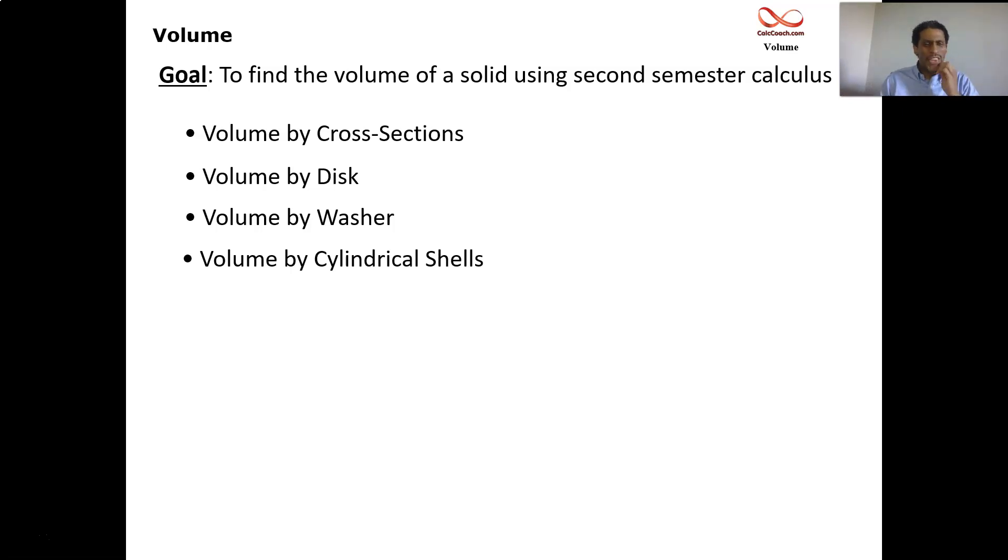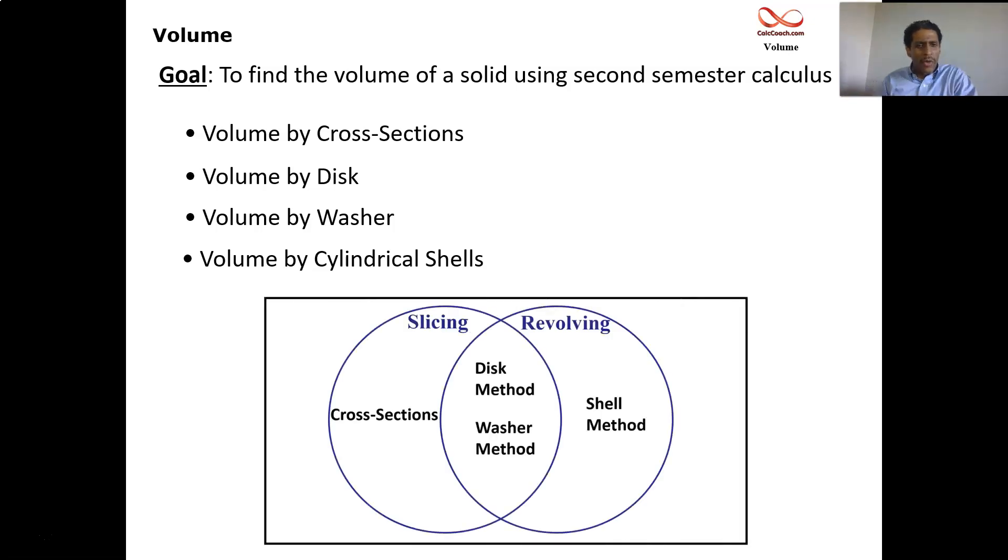The first three fit into a category where the action is happening to create the volume is a slicing. The last three fall into a category where the action that's happening to create the volume is revolving around an axis. And it turns out that disk and washer fit in both categories. It's both a revolving around an axis and a slicing at the same time. This video is all about the concept behind cross sections.